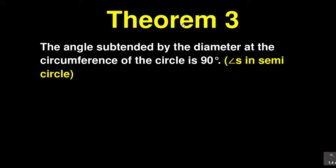Now let us look at theorem 3. It says the angle subtended by the diameter at the circumference of a circle is 90 degrees. And in short it says angles in a semi-circle.